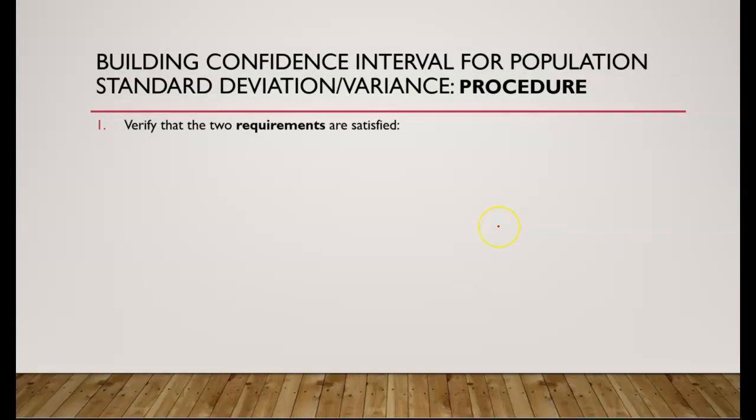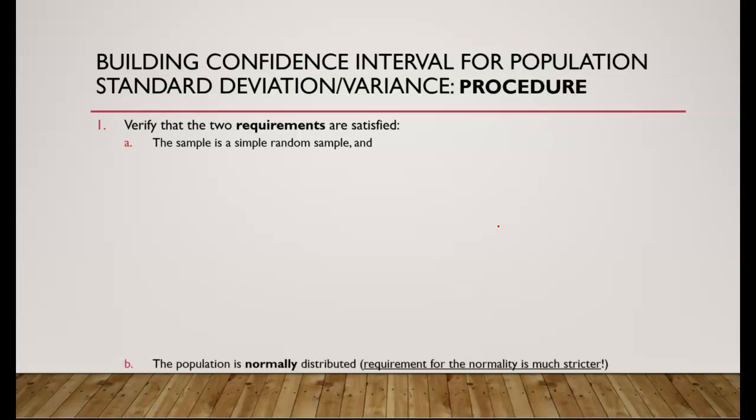The procedure for constructing a confidence interval for population standard deviation or population variance is as follows. First, we need to verify that two requirements are satisfied: the sample is a simple random sample, and the population is normally distributed. The normality requirement is much stricter for population standard deviation and population variance confidence intervals.